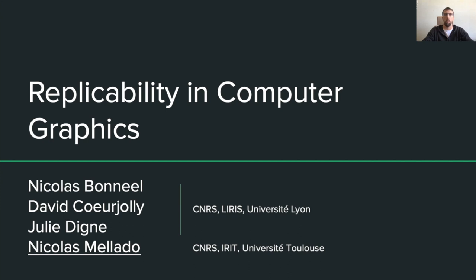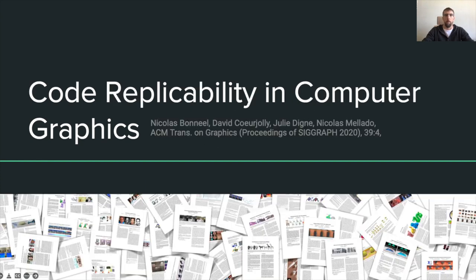Hi everyone. This is a joint work with Nicola Bonil, David Curjoli, Julie Digne, and myself, Nicolas Merdo. The findings and recommendations presented in this talk mostly come from the paper 'Code Replicability in Computer Graphics,' published at ACM Transactions on Graphics two years ago. If you want to read more on this topic, I recommend you have a look at this paper.